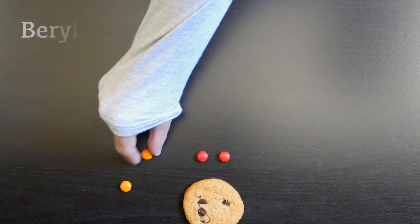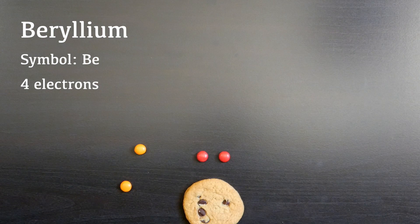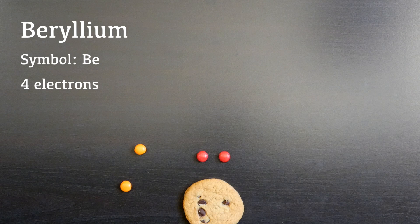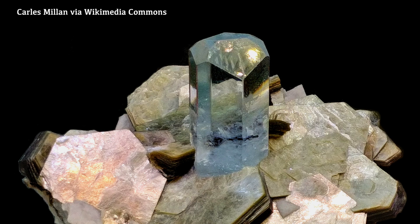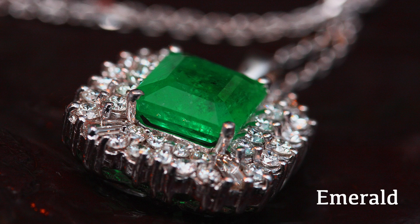The next element is beryllium, with a total of four electrons. It needs to lose two of them to become stable, and it can do that by combining with other elements. Certain valuable gemstones contain beryllium in large amounts. They include stunning green emerald.